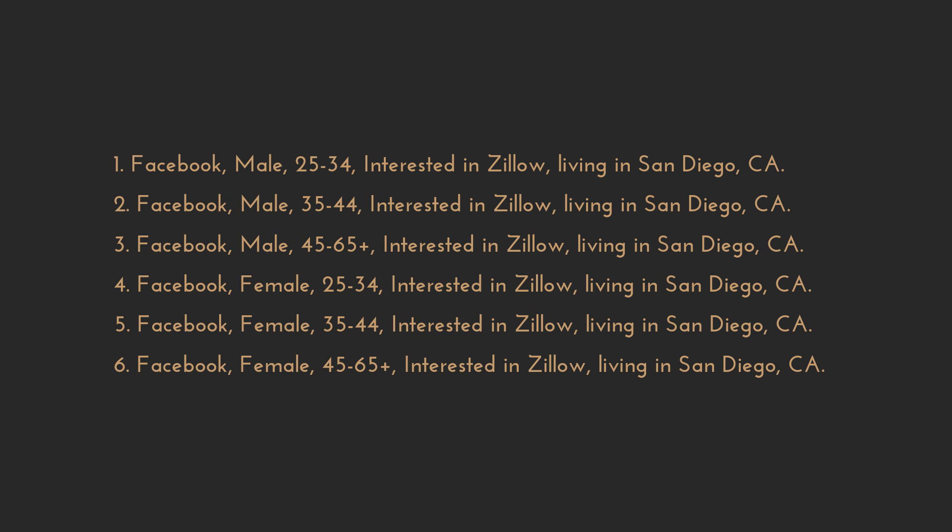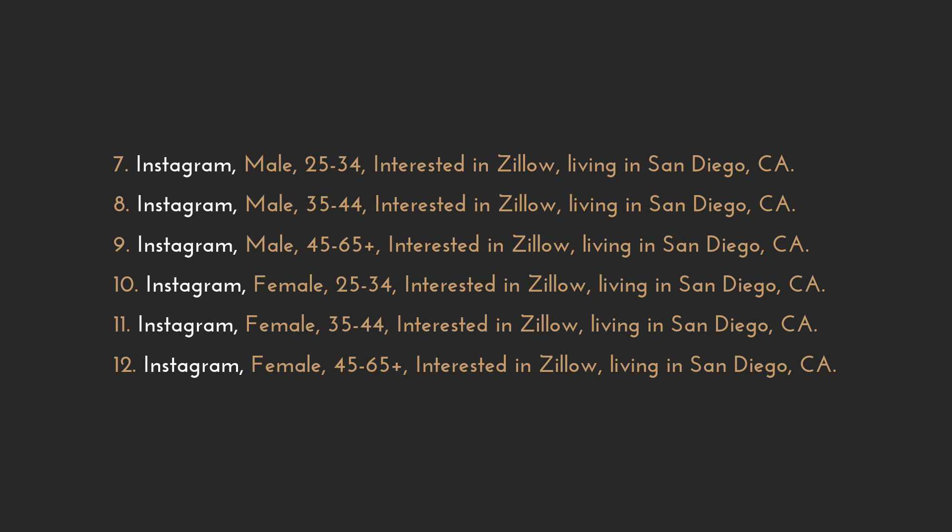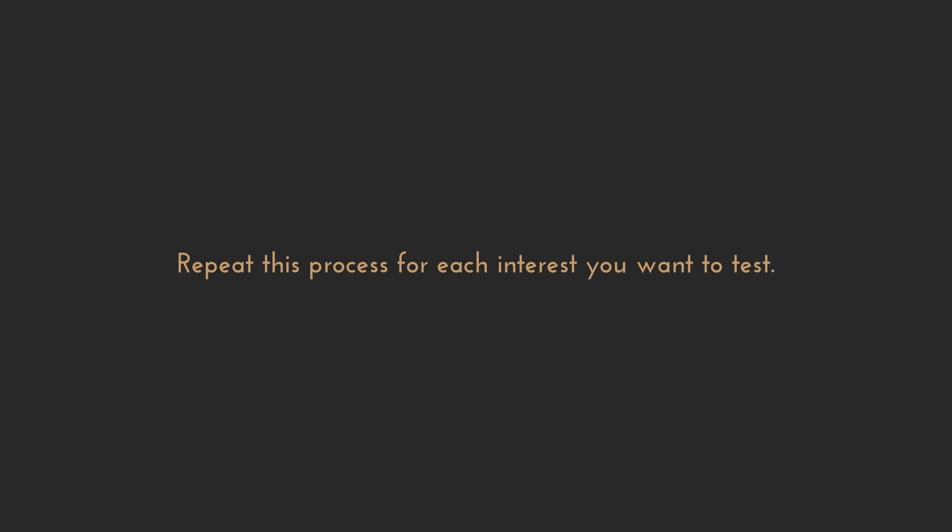After those six Facebook ad sets are done, I'll replace Facebook with Instagram and test Instagram placement with an ad suited for the Instagram screen — meaning a 4 by 5 aspect ratio — and do six of those. So that's the interest in Zillow covered. Then I'll do the same for interest in Trulia, HGTV, Redfin, Realtor.com, etc. It's certainly a lot of work, but this way I can tell exactly what's working and what's not and make the appropriate adjustments.